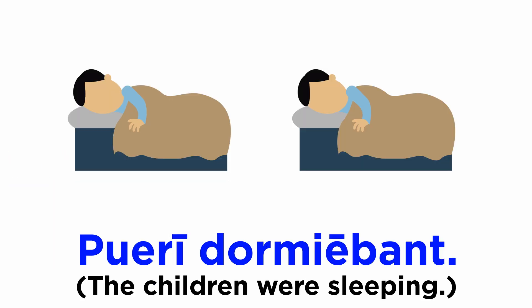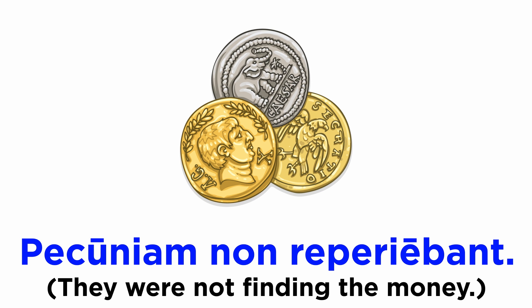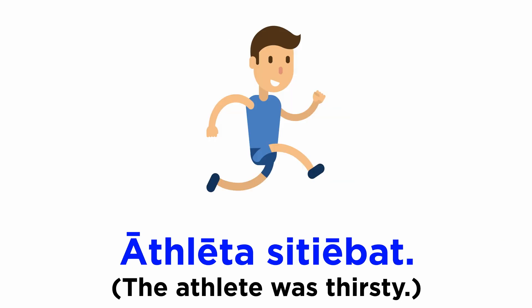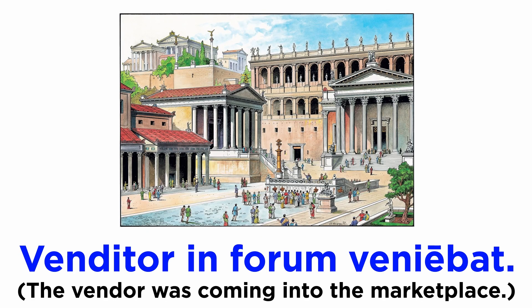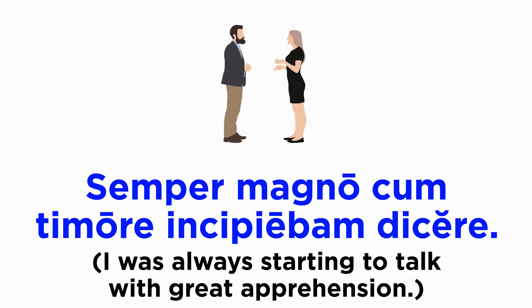Now let's look at some examples in the imperfect tense. Pueri dormiebant. Pecuniam non reperiebant. Athleta sitiebat. Aves in agris canentes audiebamus. Venditor in forum veniebat. Semper magno cum timore incipiebam dicere.